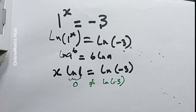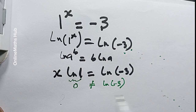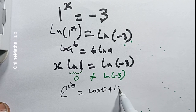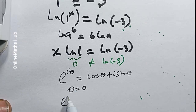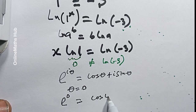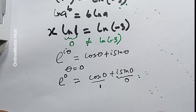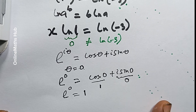Zero cannot equal the natural log of negative three, because the natural log of negative three is not even defined. So we need to extend our solution to the complex numbers. To do that, remember Euler's formula: e^(iθ) is defined as cos θ plus i sin θ. If we substitute θ = 0, we get e^0 = cos 0 + i sin 0, and since sin 0 = 0 and cos 0 = 1, this equals one.